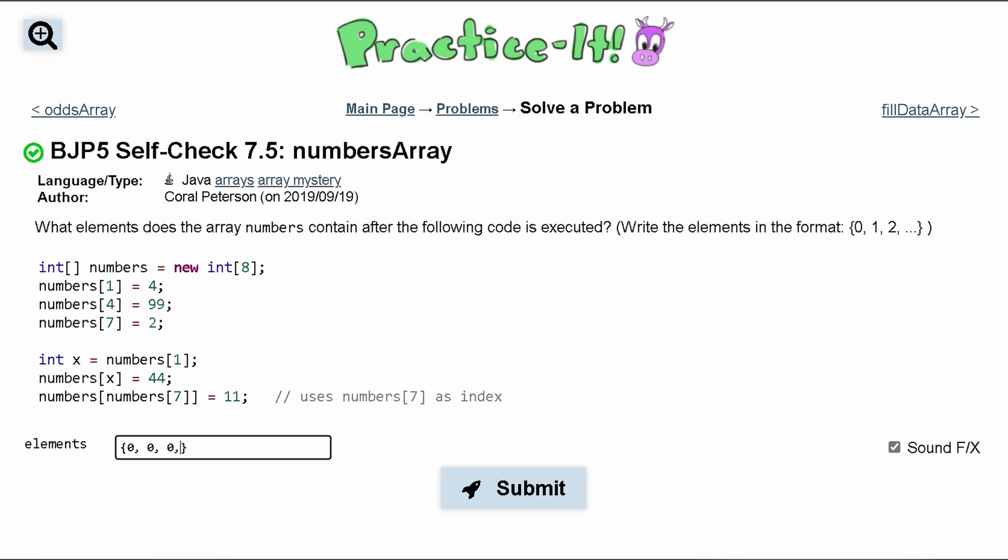So we have one zero, two zero, three, four, five, six, seven, and eight. So we have eight of these, right, because the size is eight and they're all zeros. Now as we go down we're going to start replacing these with our values because when an array is initialized without any numbers in it they're all zero.